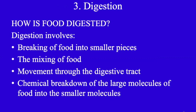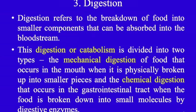Digestion involves breaking of food into smaller pieces, mixing of food, movement through the digestive tract, and chemical breakdown of large molecules of food into smaller molecules. Digestion involves a physical breakdown into smaller pieces and then a chemical breakdown where molecules break down. These molecules must break down small enough to be absorbed by the villi found in the intestine. Digestion refers to the breakdown of food into smaller components that can be absorbed into the bloodstream.